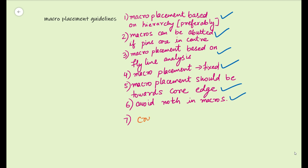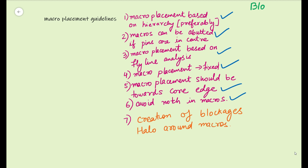In the previous video, we have discussed about the creation of blockages, and we have also said that we must have some blockages — or you can say halos — around the macros. We are going to discuss this again in detail. So we should have halos around macros. There can be different types of blockages that we can specify, and broadly speaking, these are based on placement and based on routing.